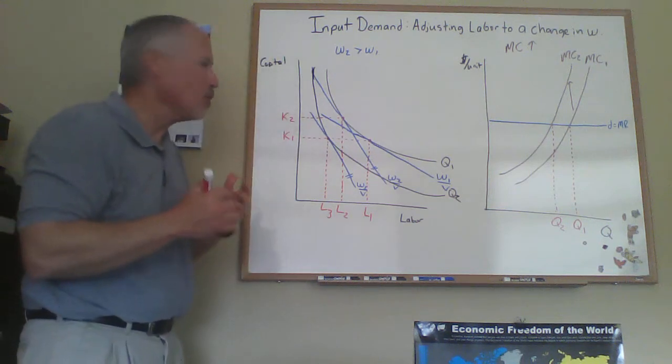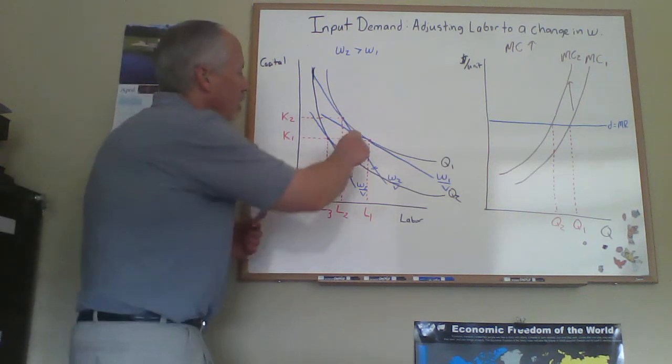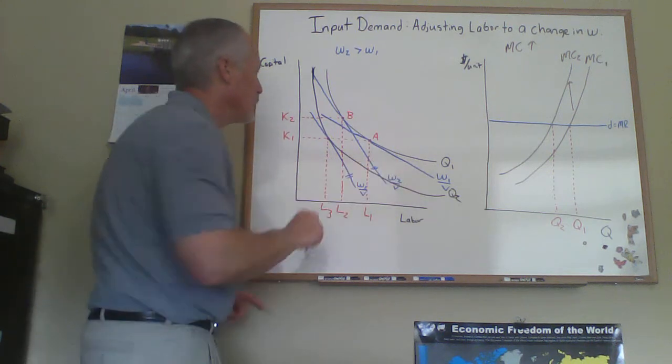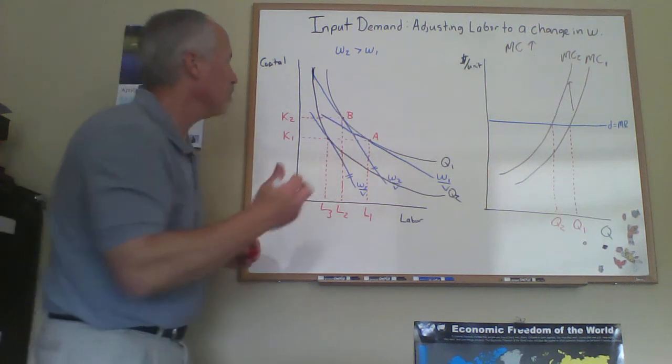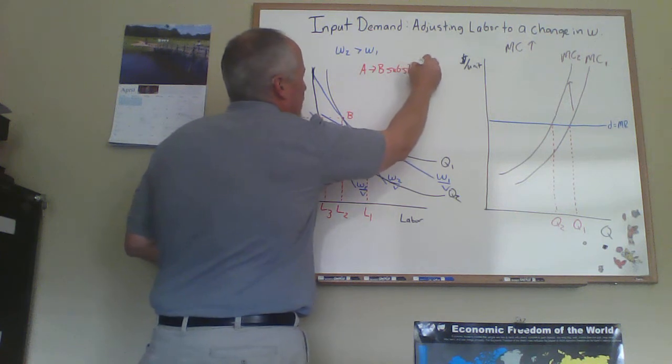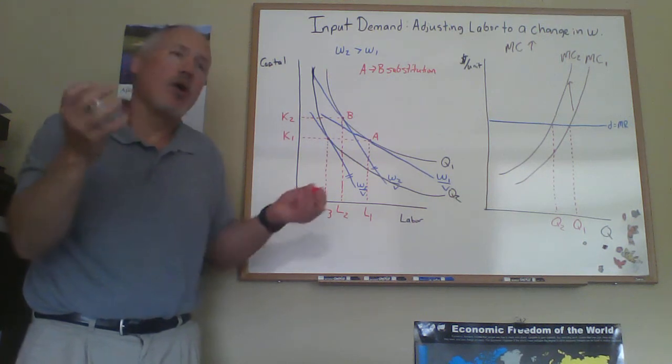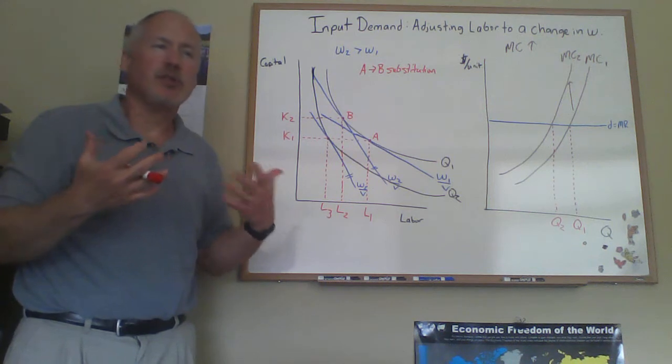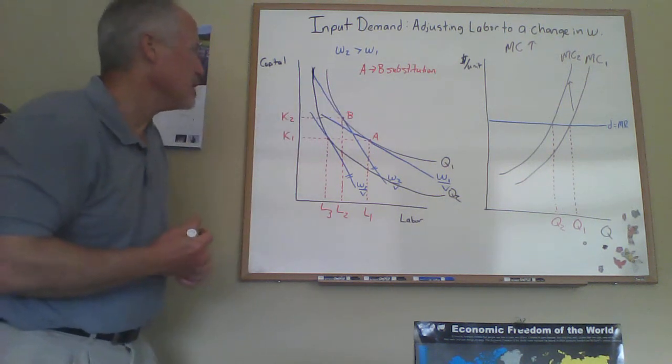What we've actually done here is illustrate or decompose the two components of the firm's response to the change in the wage of labor. The first response here that we have, if we label these points, going from point A, the tangency point with W1 on the Q1 isoquant, to point B, showing just the effect of increasing the wage, going from A to B would be what we would call the substitution effect. And that's just saying, for producing a given quantity of output, how does the firm respond? Well, if technology allows it, which we've got from the shape of this isoquant, that there is some substitutability of capital for labor. If labor is more expensive, you substitute capital for labor.